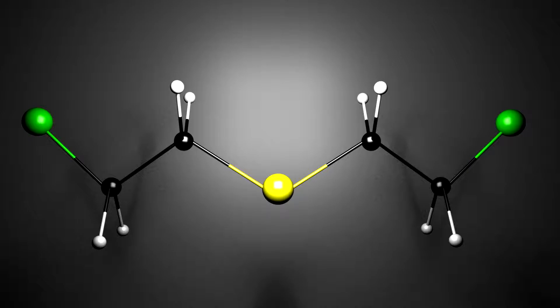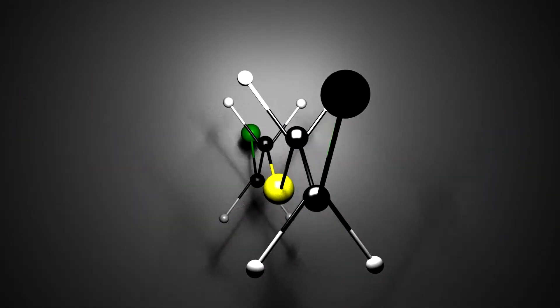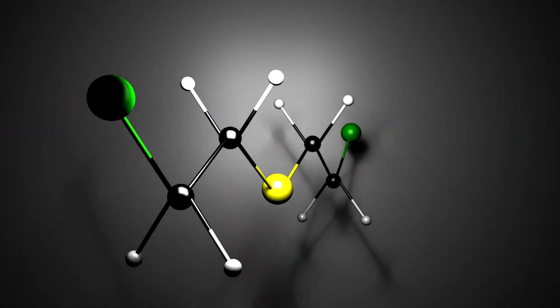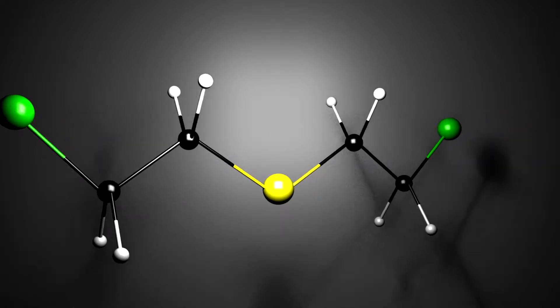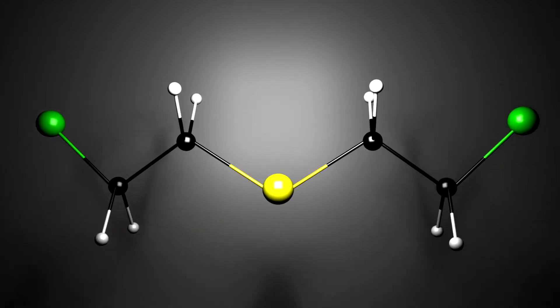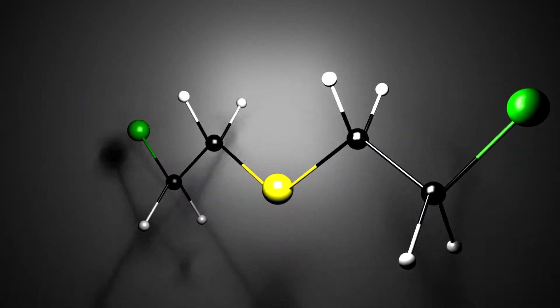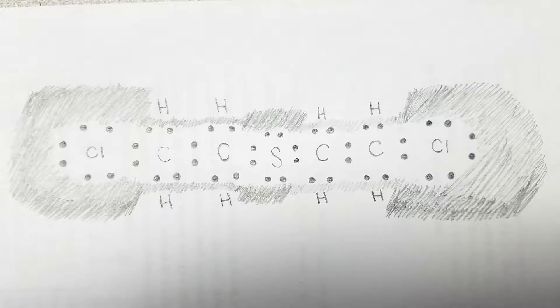By itself, the 3D model fails to fully show the structure-function relationship. Similar to the skeletal structure, it does show the most important regions and atoms which dictate certain properties and functions. However, it also lacks the electron behavior that the Lewis dot diagram shows, which is extremely important on learning how sulfur and mustard works as a chemical weapon.